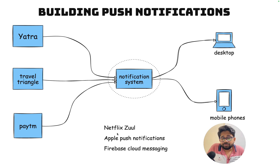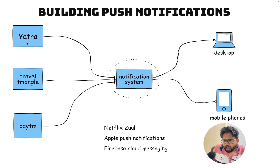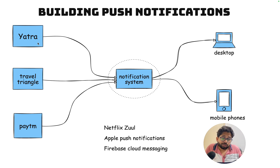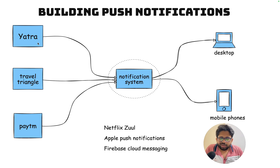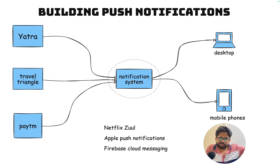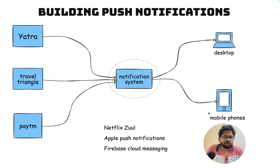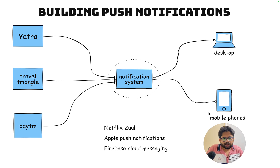What are the things they have taken care of while building the notification system? There are other notification systems as well, like Apple Push Notification System and Firebase Cloud Messaging. The overall idea is that you are a client working in a company and you want to send notifications to your customers — in-app notifications like a discount coupon. You make an API call to these systems and then these systems communicate to the mobile phones. I'm going to focus only on the communication part between the mobile phones and the notification system.